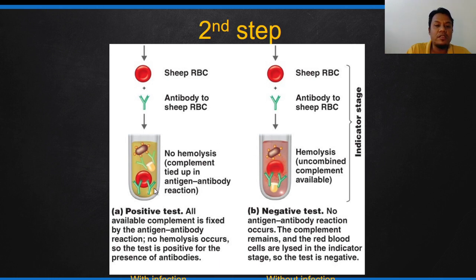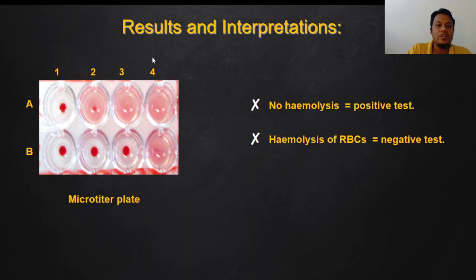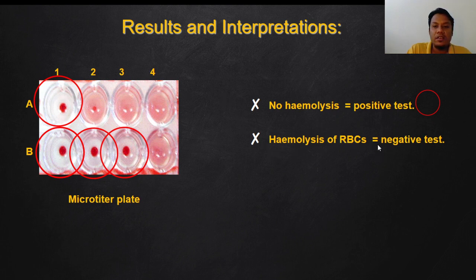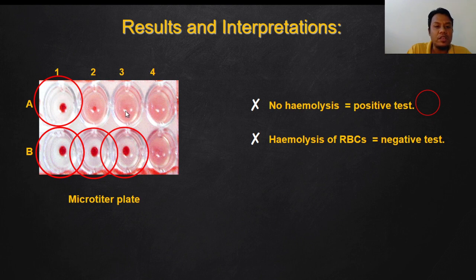No hemolysis means a positive test — the sheep RBC is still intact. Hemolysis of RBCs means a negative test. The second image (2A) is not very clear because maybe the reaction is not finished yet, but you can observe here complete hemolysis — no RBC can be observed and the cell contents have been released into the serum.